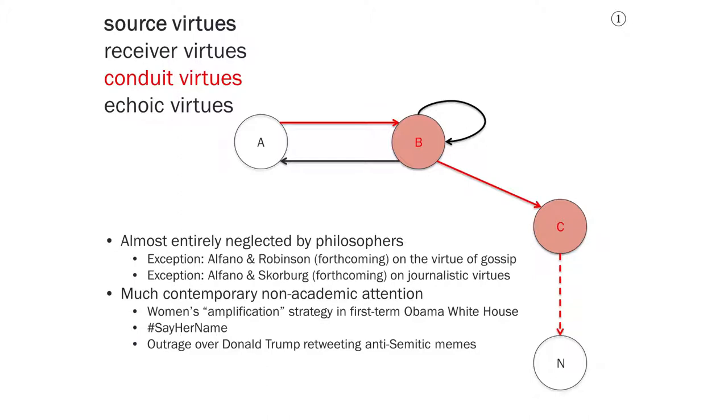Two other kinds of virtues that have not been discussed as much are conduit virtues and echo virtues, where a source virtue makes someone an excellent original source of communication, and a receiver virtue makes someone an excellent recipient of information from someone else. A conduit virtue makes someone an excellent conduit through which knowledge or information can pass. They might do this by believing what they've been told and reporting it as their own knowledge to someone else, or they might express such a conduit virtue by quoting or paraphrasing what someone else has said.